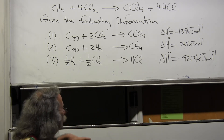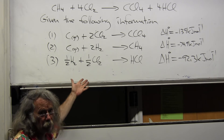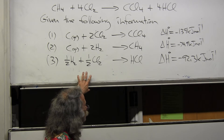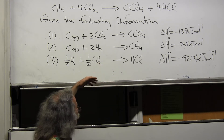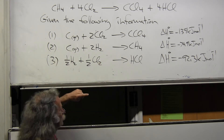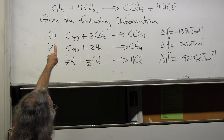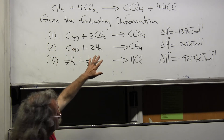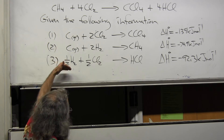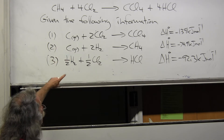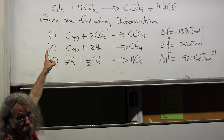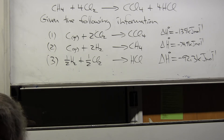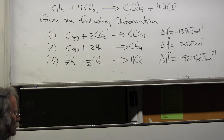The enthalpy is path independent, so I don't even have to be able to perform the reaction of methane plus chlorine directly. I can perform these three reactions, measure them, and then I know the enthalpy of the target reaction. This gives us great flexibility — this is Hess's Law.